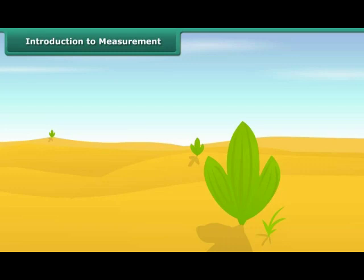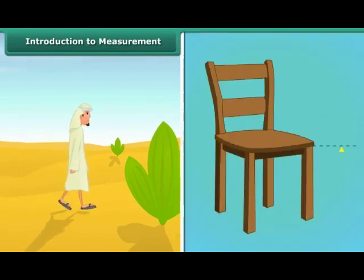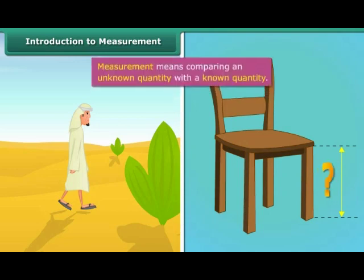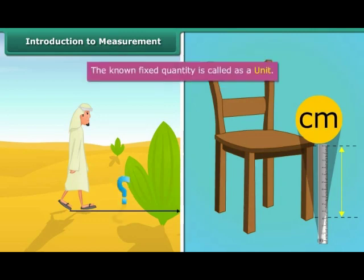Introduction to Measurement. Do you know how people know how much they have travelled or the length of a leg of a chair? This is done by using a term called Measurement. Measurement means comparing an unknown quantity with a known quantity. The known fixed quantity is called a unit.